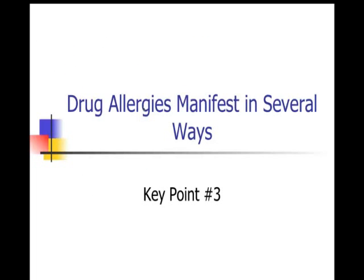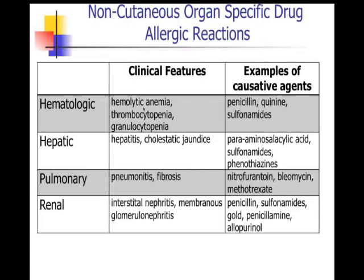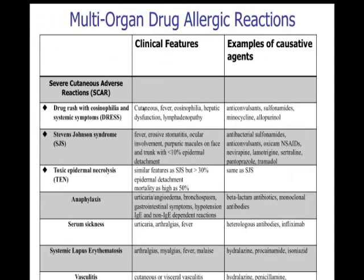The next key point is that drug allergies can manifest in a variety of ways. The most common presentation is cutaneous drug reactions. This includes exanthems, urticaria, angioedema, fixed drug eruptions, pustules, bullous reactions, and even cutaneous lupus. Other organs can be involved as well — not just the skin — including hematologic reactions, liver reactions, lung reactions, and kidney involvement. Multi-organ drug allergic reactions can also occur.